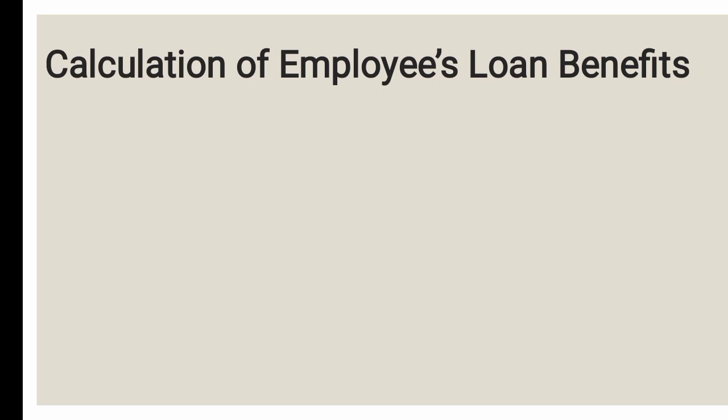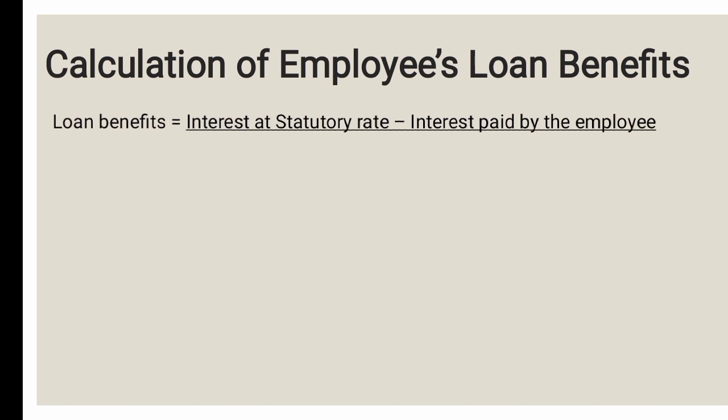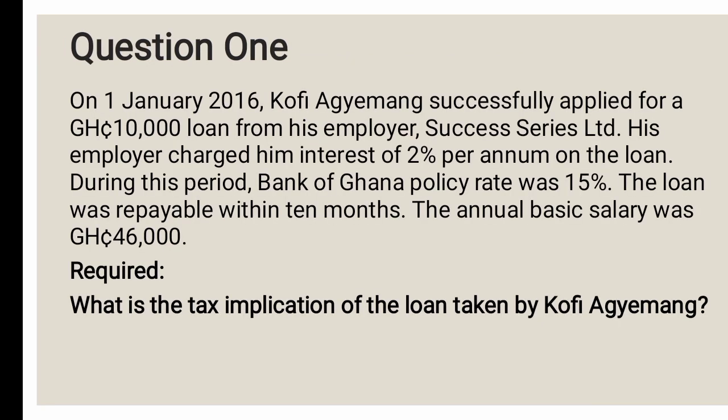Now let's look at the calculation. The loan benefit equals interest at the statutory rate minus the interest paid by the employee, and we divide all of this by four. Interest is calculated as: Principal × Interest Rate × Time, where time is expressed in years.